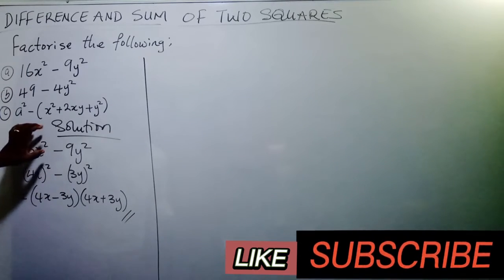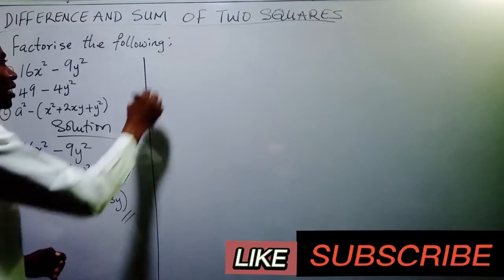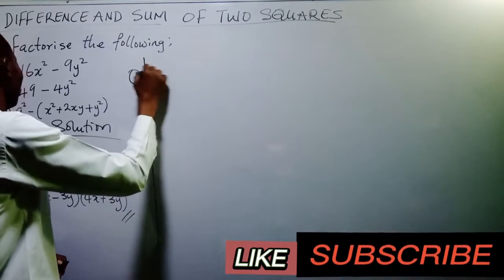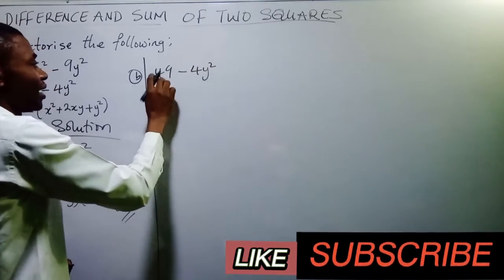You have successfully factorized 16a square minus 9y square. Now, let's look at the second one. 49 minus 4y square.